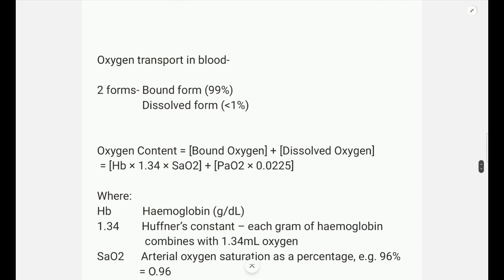Now we will discuss oxygen transport in blood. Oxygen is transported in two forms: the bound form and the dissolved form. Bound form is 99% and dissolved form is less than 1%.